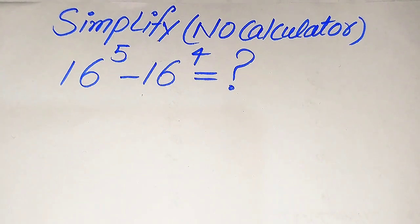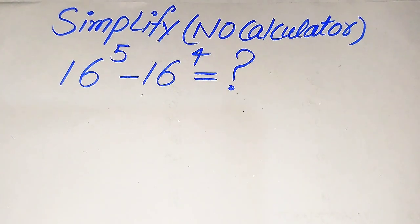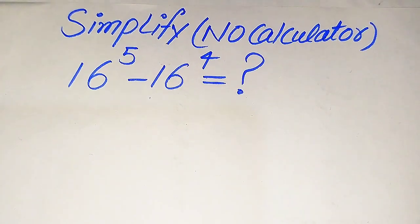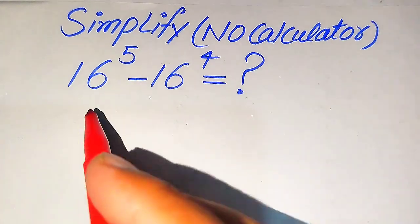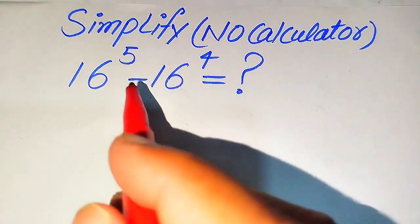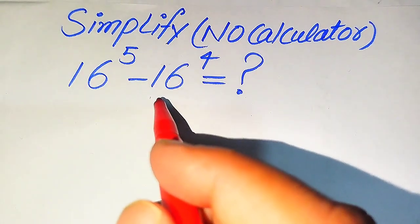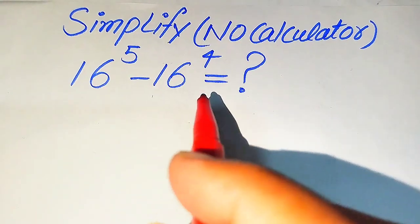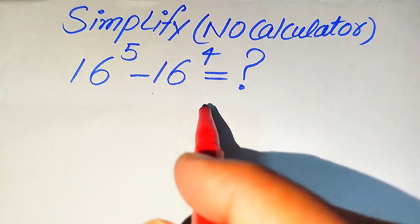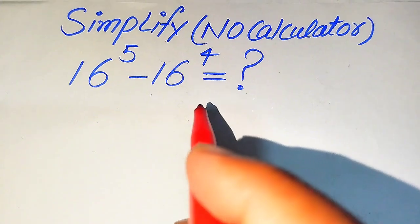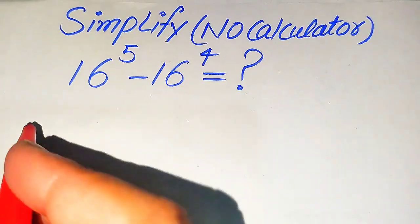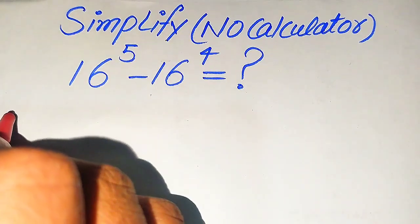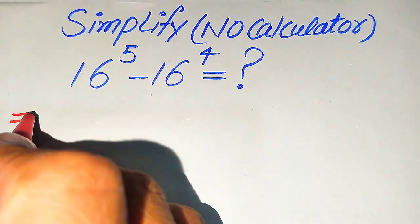Hello everyone. How to simplify this algebraic expression: 16 to the power of 5 minus 16 to the power of 4. We will write this expression into simplified form.